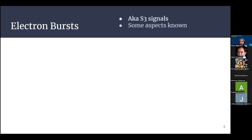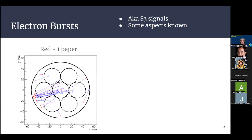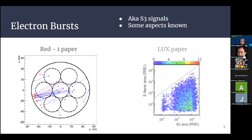While searching for WIMP particles, nothing out of the ordinary was detected. Instead, it is useful to study the background of the detector itself. Some of the first results of the XENONnT detector showed interesting activity when the S2s had an area above a certain threshold. These were determined to be electron bursts, or S3 signals, and already have some generally accepted characteristics. The experimental TPC known as RED-1, based in Russia, has published the change of position between an S2 and the following S3 signal.